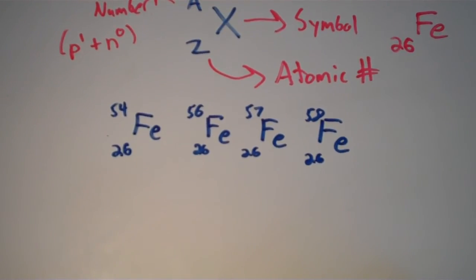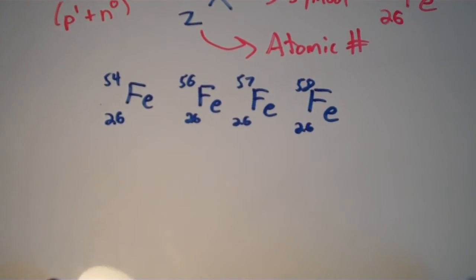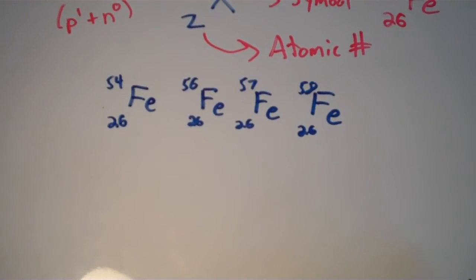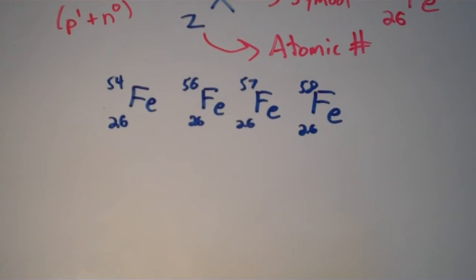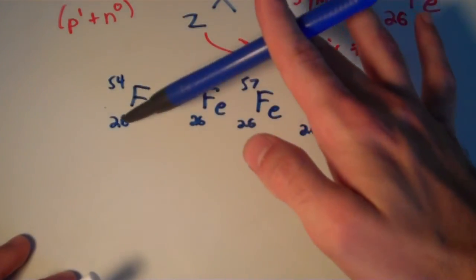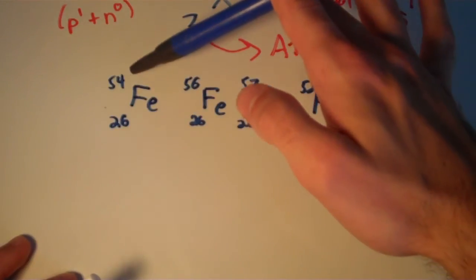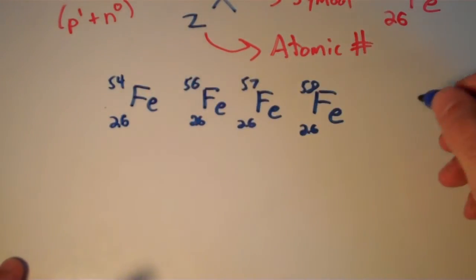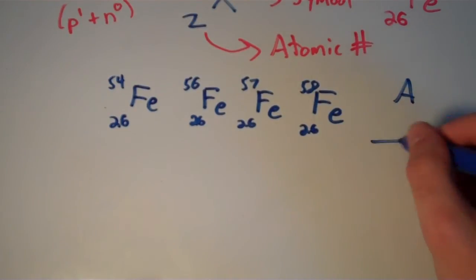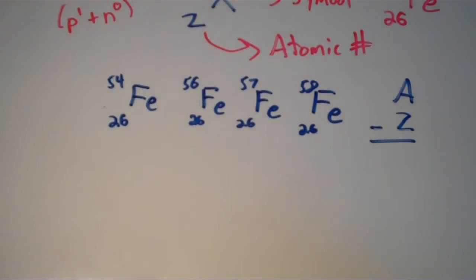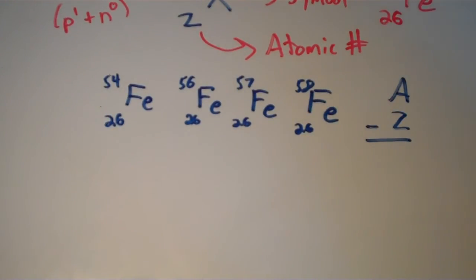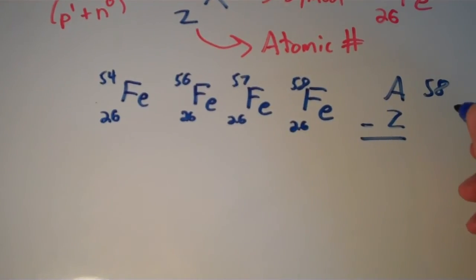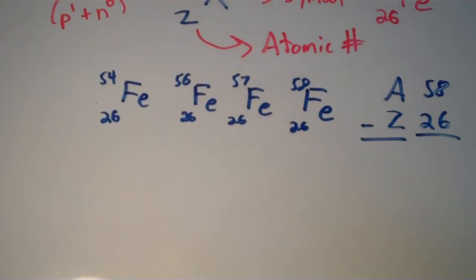So this is the notation for the four isotopes, the four naturally occurring isotopes of iron. So now we're in a position where we can find the number of neutrons. We said that the lower number is the atomic number, the number of protons, and the upper number is the mass number, or the number of protons plus neutrons. So if we take the mass number A, and we subtract from that the atomic number Z, so in the case of this one here, it would be 58 minus 26, well then we'll get 32 neutrons. So that's pretty straightforward.